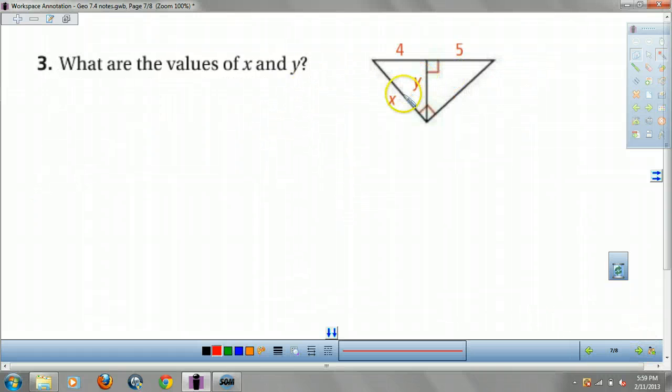So what are the values of X and Y? According to our first corollary, Y equals the geometric mean of 4 times 5 of these two lengths. The altitude. Which would equal square root 20, which is 4. Or, I'm sorry, 2 root 5 if you want to break it down.